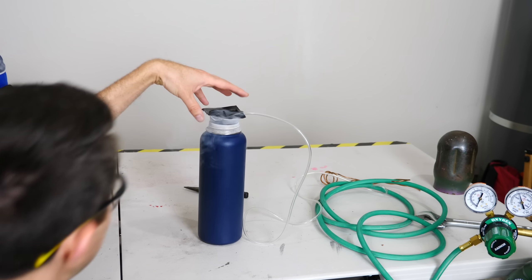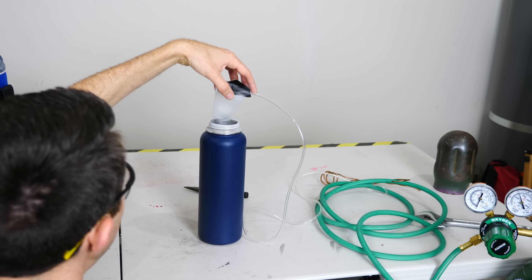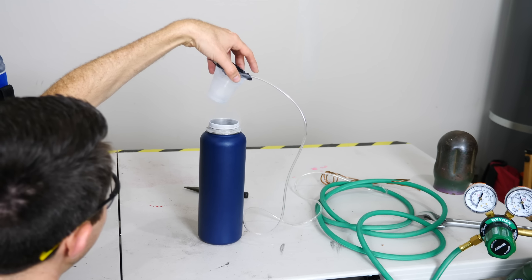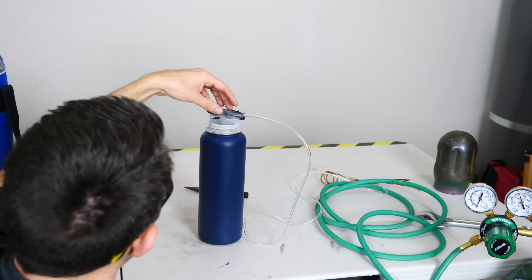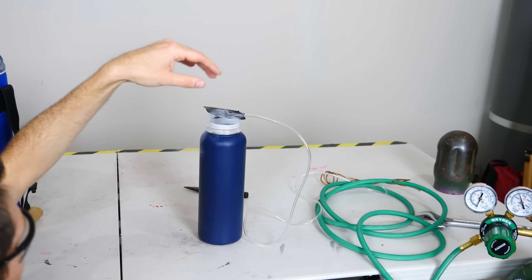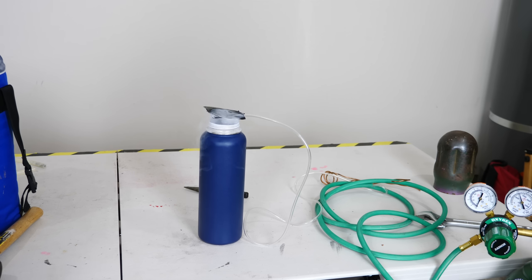So in order to make this liquid oxygen, first I just need liquid nitrogen because liquid nitrogen boils at a lower temperature than liquid oxygen. And then I'll just flow oxygen gas into a cup floating over the top of the liquid nitrogen. So the liquid nitrogen will condense the oxygen gas into liquid oxygen.